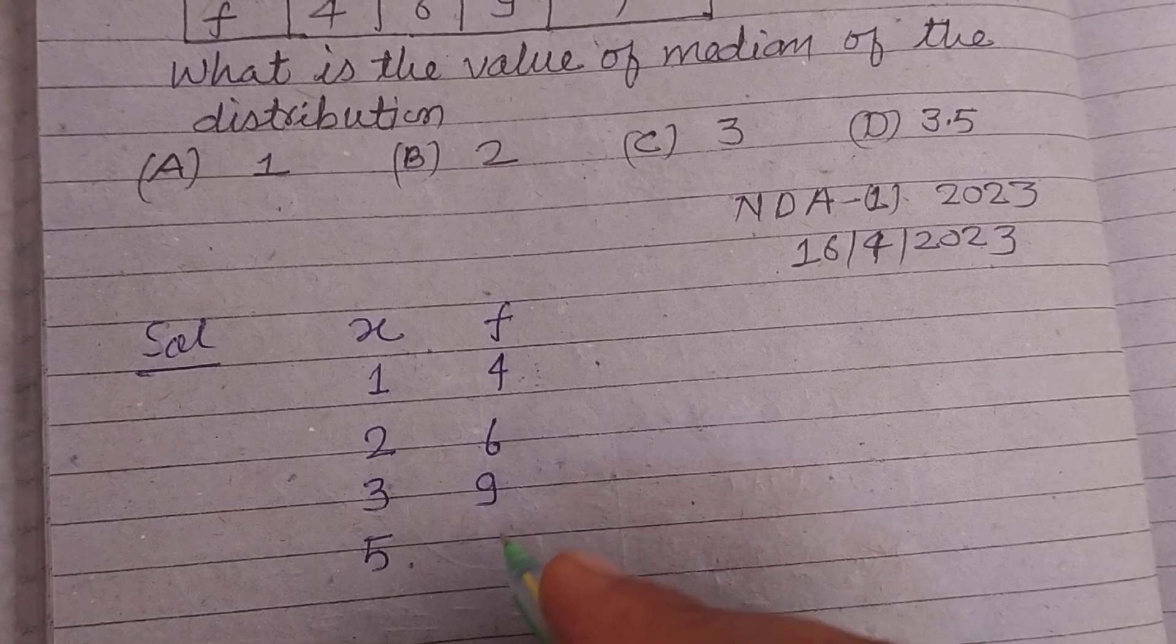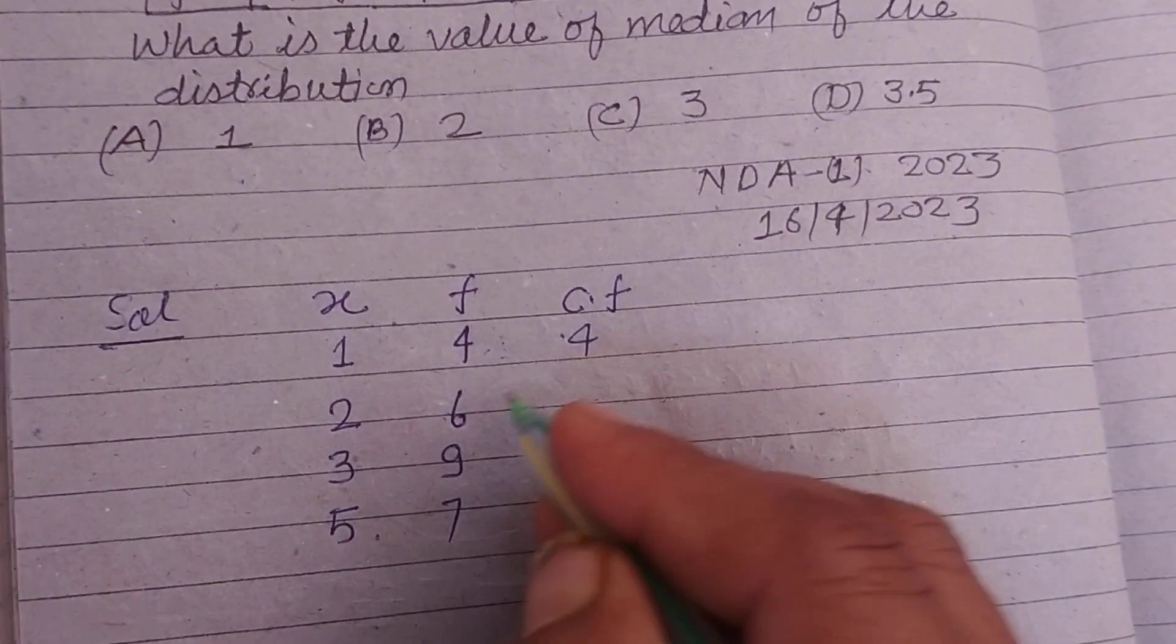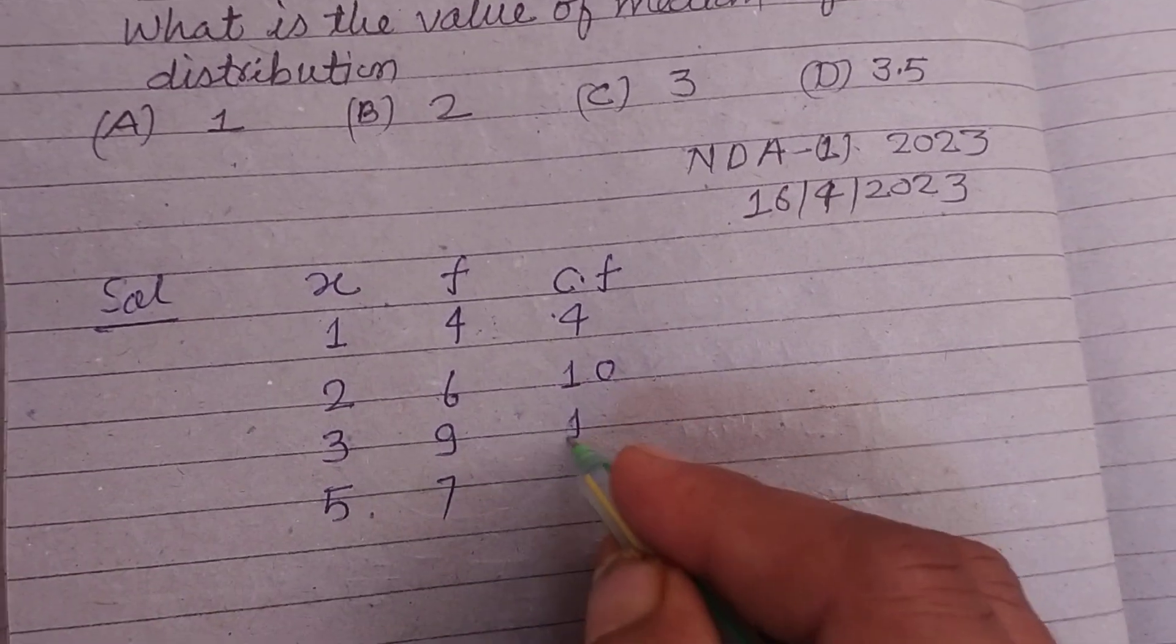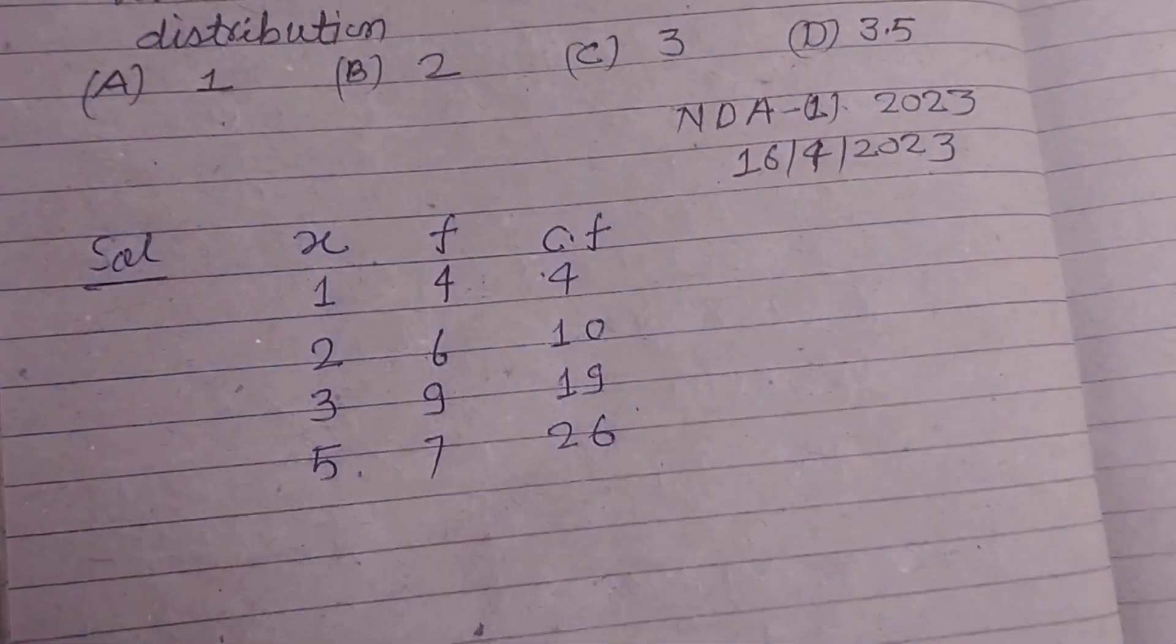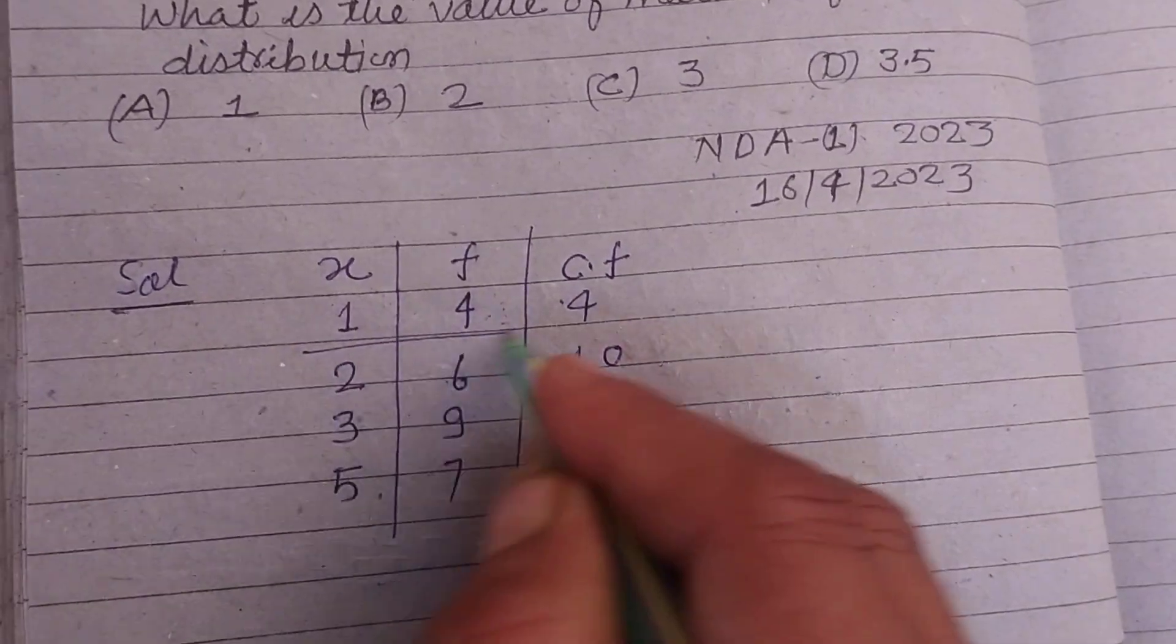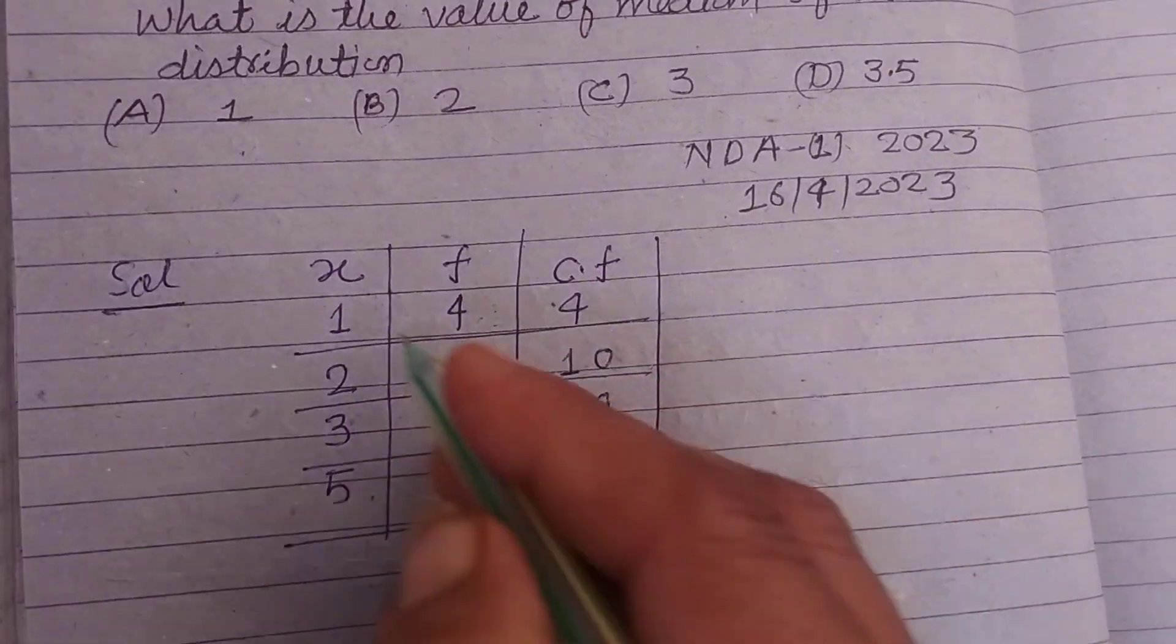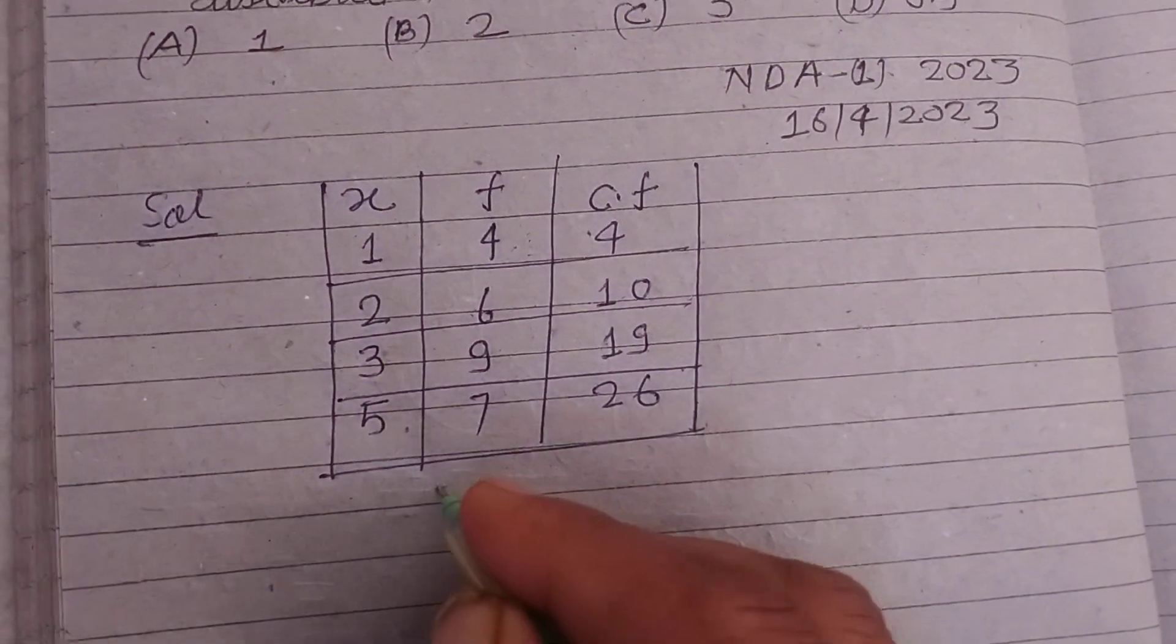Now we find cumulative frequency: 4, then 4 plus 6 equals 10, then 10 plus 9 equals 19, then 19 plus 7 equals 26. So this is the table of frequency distribution.